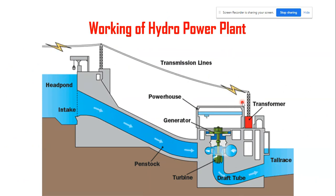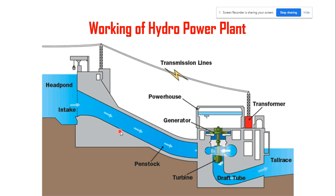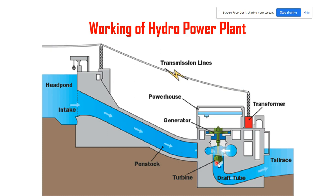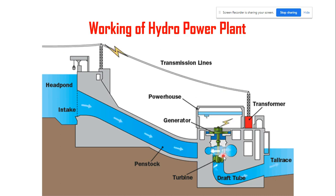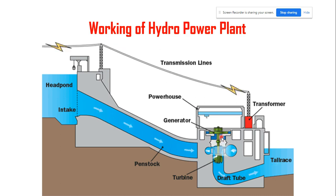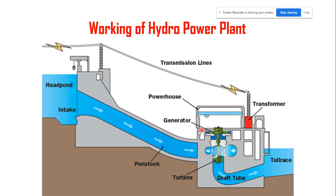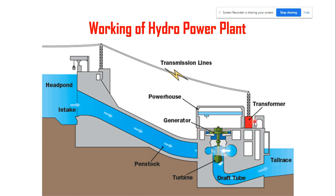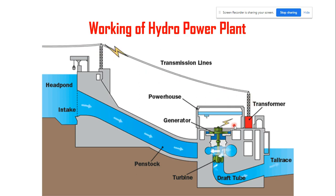Coming to the working of the hydro power plant — we have discussed all the basic components. This animation clearly shows the direction of water inflow into the turbine and how the turbine blades are rotated by the kinetic energy of the water. The turbine shaft is connected to the generator, providing mechanical energy as input. The generator generates electricity, which is then transmitted through the transformer, as indicated by the transmission line in the animation.